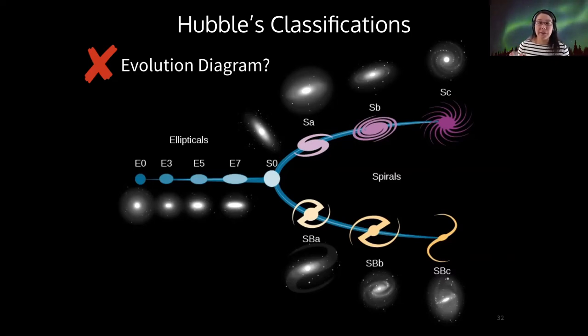So we don't look at Hubble's classification system as an evolutionary diagram, even though we do think that galaxies change over time.